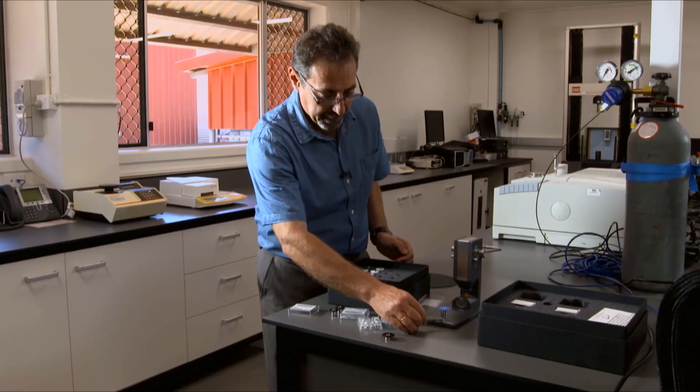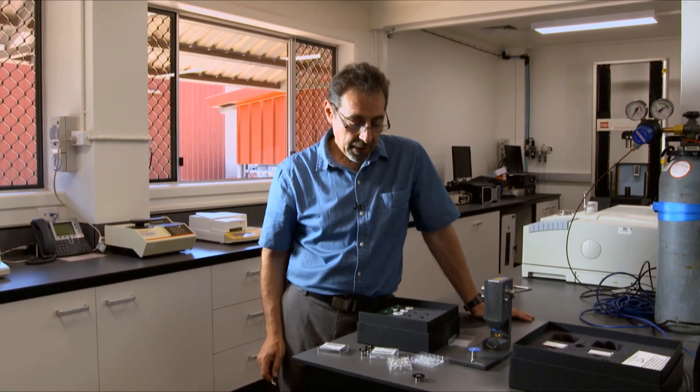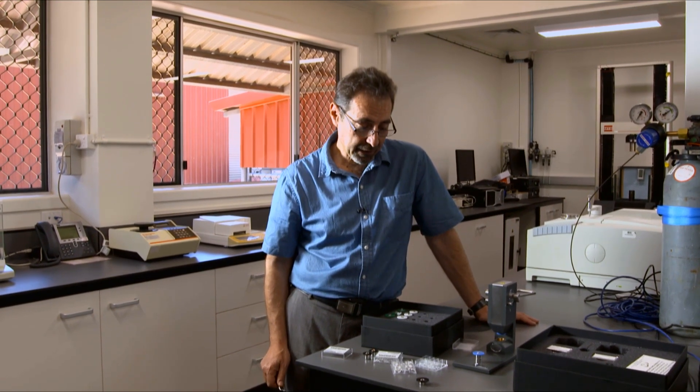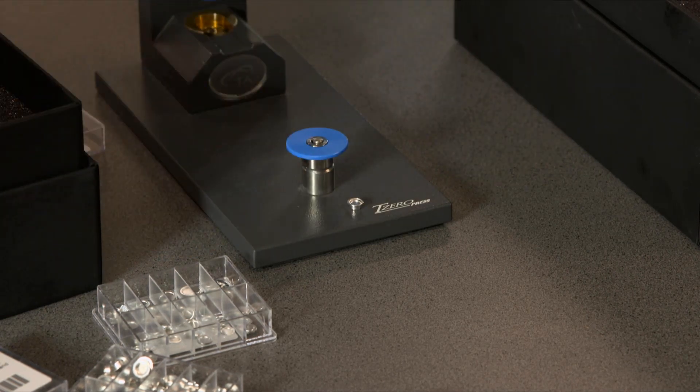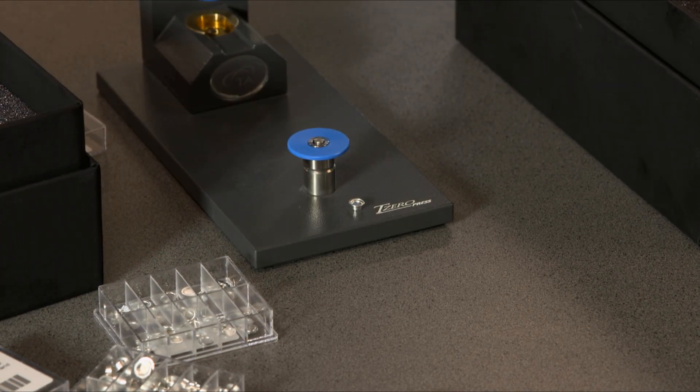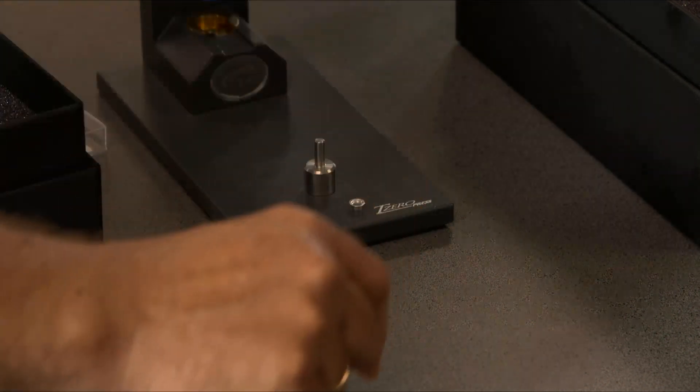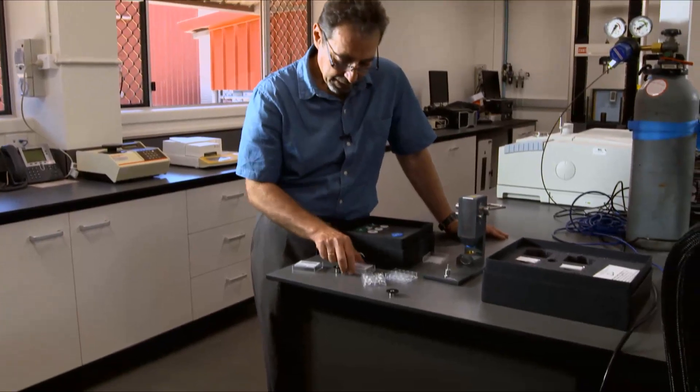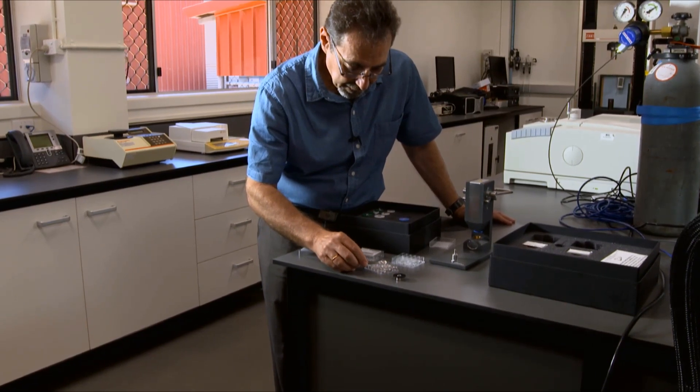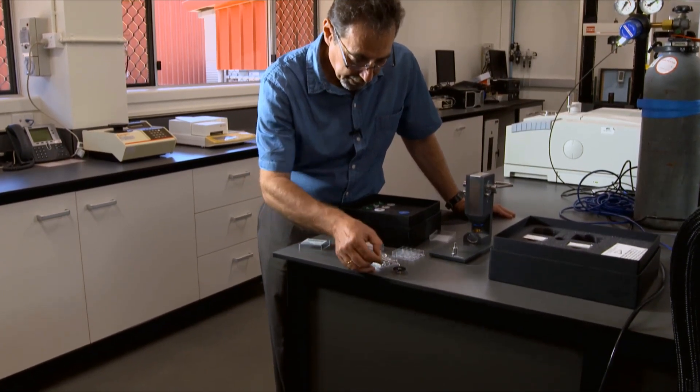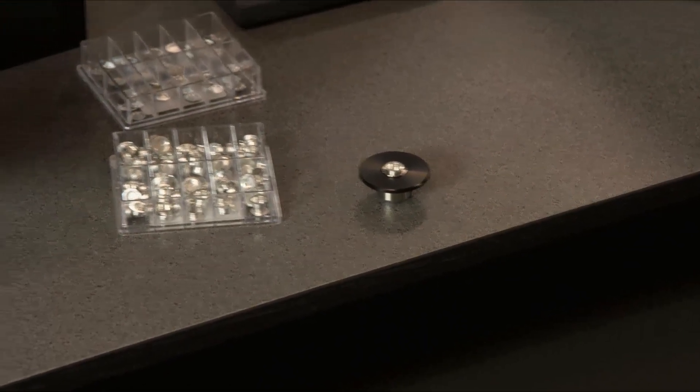Now hermetic pens are used for samples which are liquids, gels, paste, so that you do not squeeze your sample out of the pen when you crimp it. When you work with polymers, you will more often use standard T0 lid. Now we are going to make reference T0 pen.